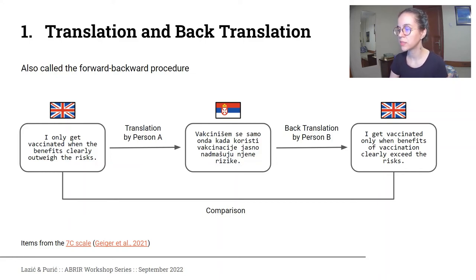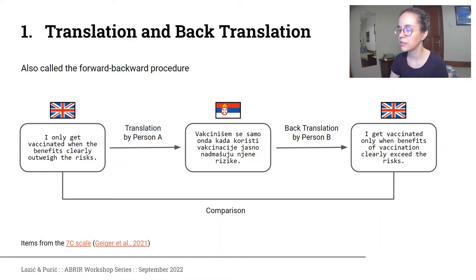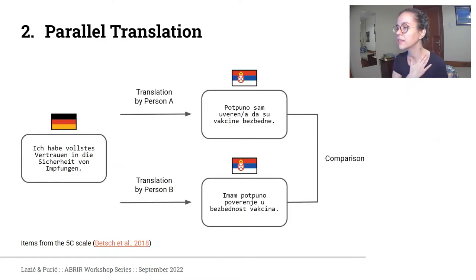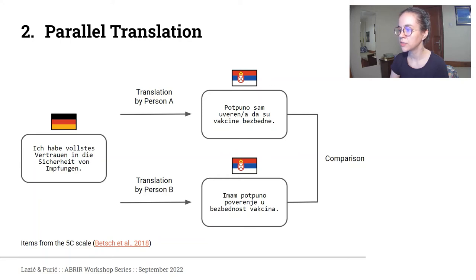As a third step, we compare the original items with the back-translated items to see if anything important was changed and to reconcile any differences that appear. We applied this method to translate a scale that measures vaccination readiness. The author of the original scale was the one who compared the original version with the back-translated version, we then discussed why some discrepancies appeared, and finally the author approved our translation.